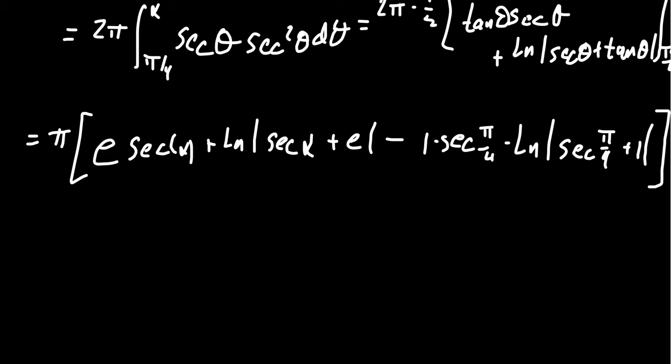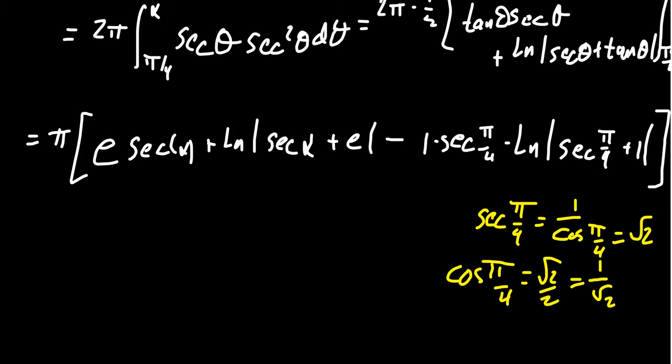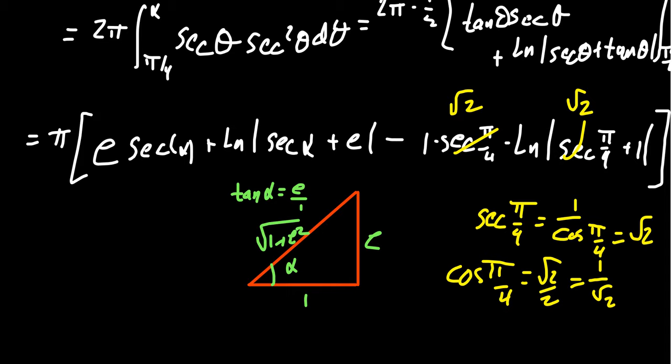Secant of π/4 is just 1 over cosine of π/4. Cosine of π/4 is root 2 over 2, which is the same thing as 1 over the square root of 2, which means secant of π/4 is the square root of 2. Secant of α takes a little bit more effort, but not beyond our reach. If we think of the associated right triangle here, where the angle is associated to α, since we know that tangent of α equals e over 1, we get e and 1. Then the other side will be the square root of 1 plus e squared. Secant is going to be the hypotenuse over the adjacent side. So we see that secant of α is the square root of 1 plus e squared.